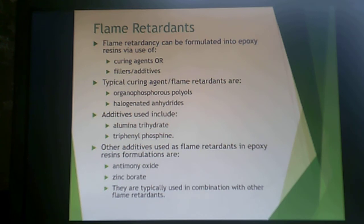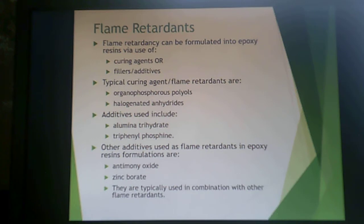Flame retardancy can be formulated into epoxy resins through curing agents, fillers, or additives. Typical curing agent flame retardants include organophosphorous polyols or halogenated anhydrides. Additives can include alumina trihydrate or triphenyl phosphine. Other flame retardant additives such as antimony oxide and zinc borate are typically used in combination with other flame retardants.